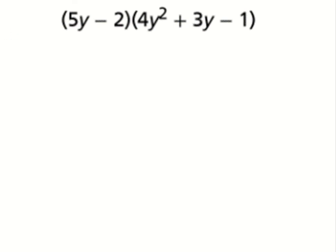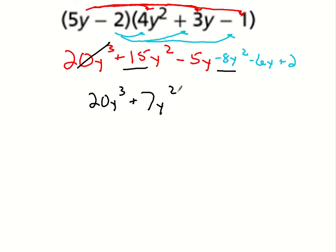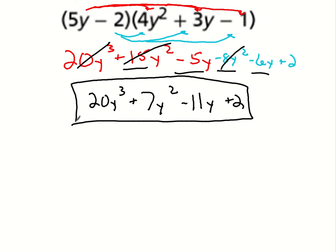Solve this one and see how you do. When you multiply 5y by everything and negative 2 by everything, then combine like terms: only one y to the third power term, so that stays. For y squared: 15 and negative 8 make positive 7y squared. Then negative 5 and negative 6 make negative 11y. And then I still have the positive 2. There's your final answer.